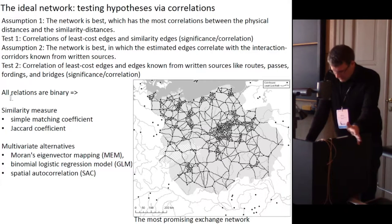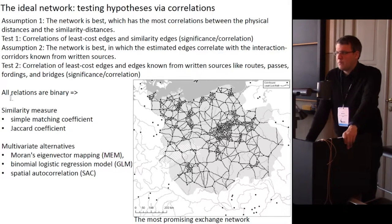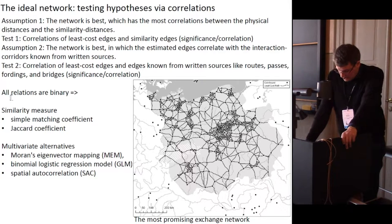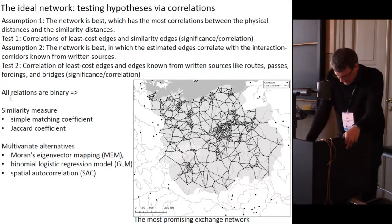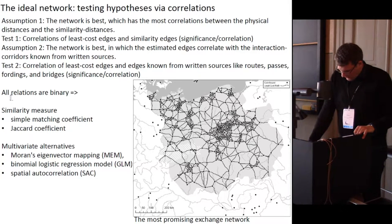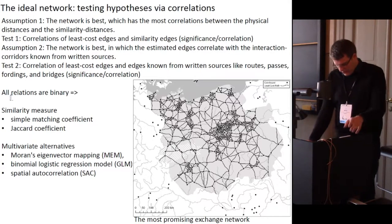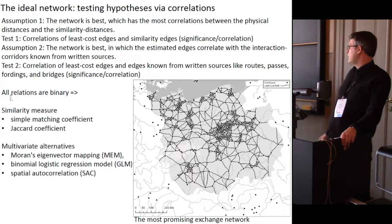We have now seen several possibilities of generating different exchange networks with fluent thresholds. The question is how to receive an ideal network. In this regard, different assumptions can be tested. The first is that the network is best which has the most correlations between the physical distances and the similarity distances. The second is that the network is best in which the estimated edges correlate with the interaction corridors known from written sources. To get significance and accordance values, one can perform correlations. On the slide you can see the most promising exchange network determined by comparison of two different methods.